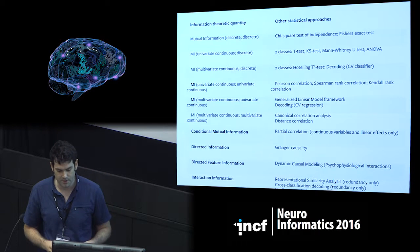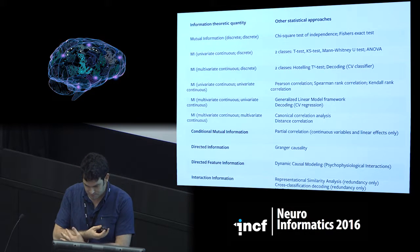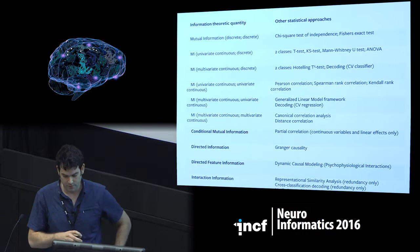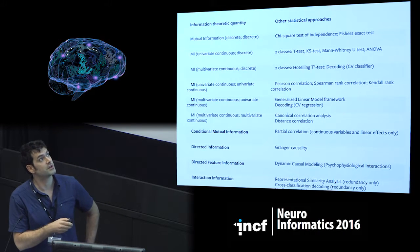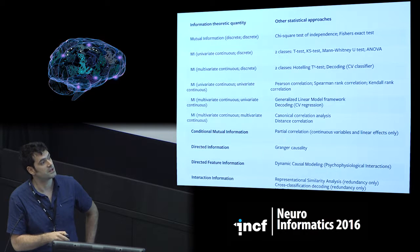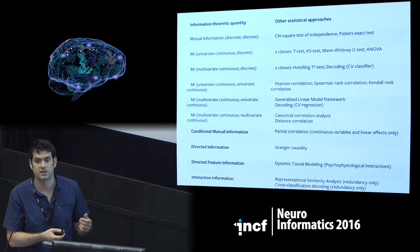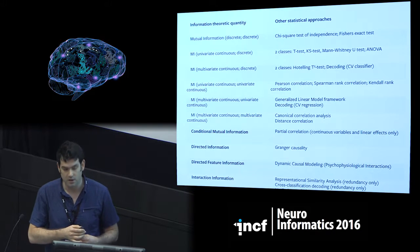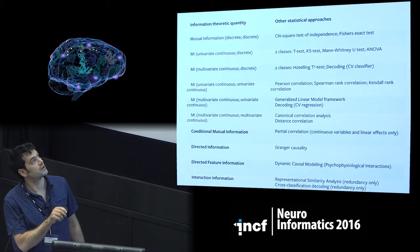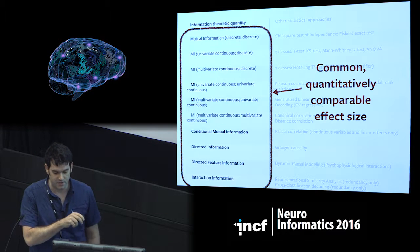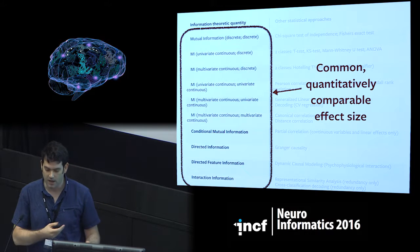Mutual information is a bivariate measure of dependence, but I'm going to try to convince you that it forms the basis of a framework for data analysis. There are other information-theoretic quantities that consider more than two variables and let you answer additional questions. We have many different statistical tests which have effect sizes that are hard to compare because you have inherently different statistics and also very different degrees of freedom in different experiments. But they all have a direct information-theoretic analogue. The crucial thing is that the information-theoretic values really give you common, quantitatively comparable effect sizes that you can meaningfully compare, add, and subtract.